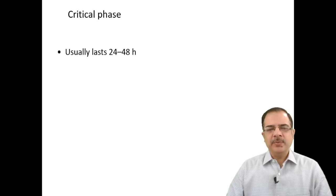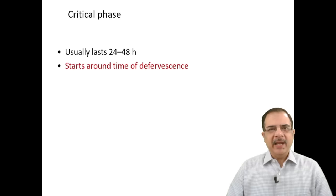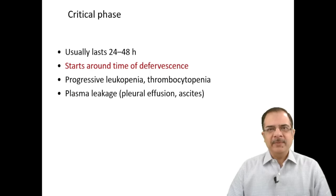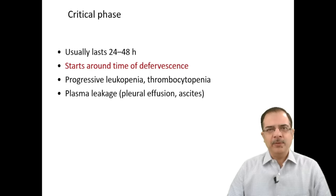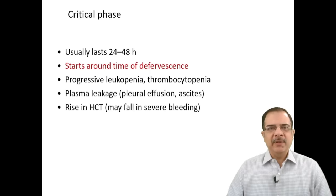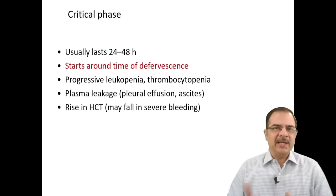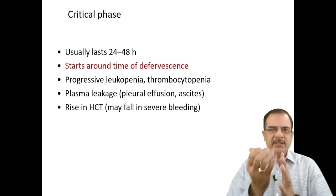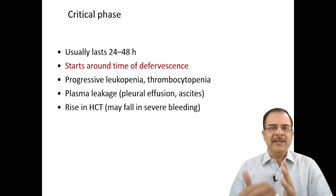This is followed by the most important phase — the critical phase — which lasts for 24 to 48 hours, around the time fever decreases. It is characterized by progressive leukopenia and thrombocytopenia. There will be plasma leakage into the pleural or peritoneal space, and a rise in hematocrit. When only plasma is leaking, RBC concentration increases, so PCV or hematocrit will increase.